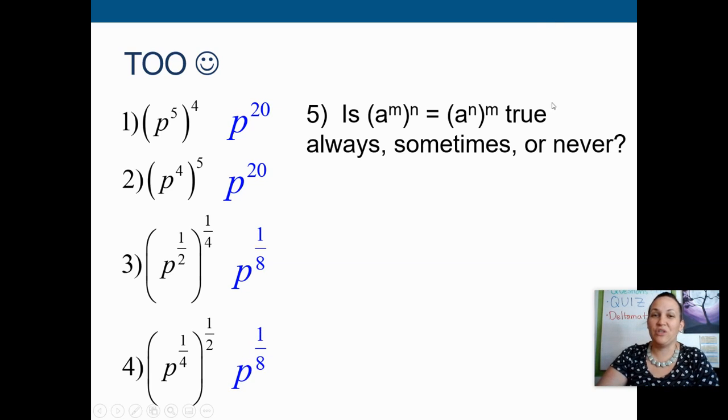Based on this information, we should be able to tell that question five is always true. Because basically what's happening is we're switching the order of the multiplication problem. And order doesn't matter in multiplying. So it's okay to do m times n or n times m. That's called the commutative property.